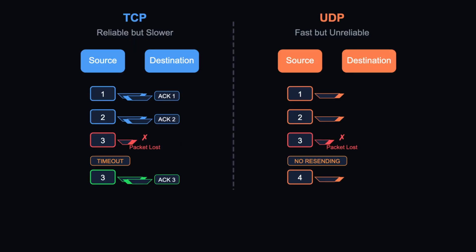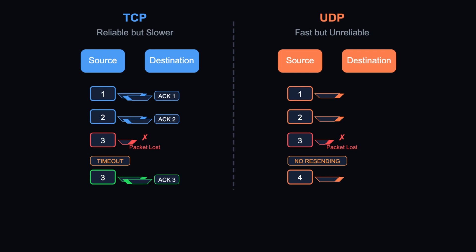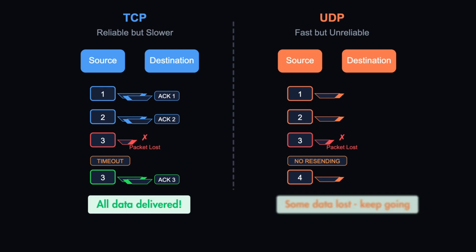In short, TCP is the safer and more reliable option but it is slower, while UDP is faster and lightweight but risky. If a packet is lost in UDP it doesn't get resent — no guaranteed delivery. In TCP, if a packet is lost it is resent after a timeout, guaranteeing that all data will be delivered, whereas in UDP some data might be lost but transmission keeps going.